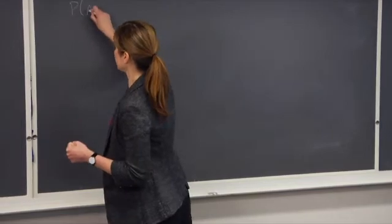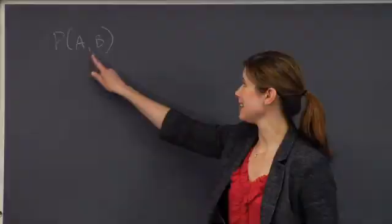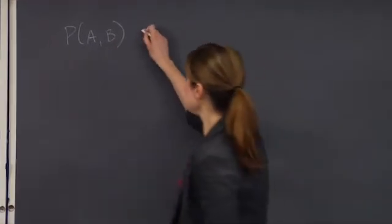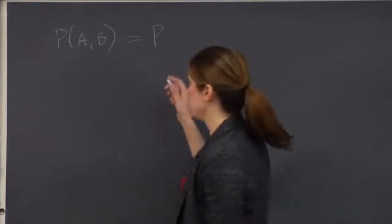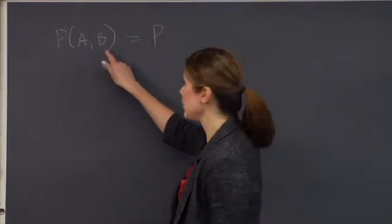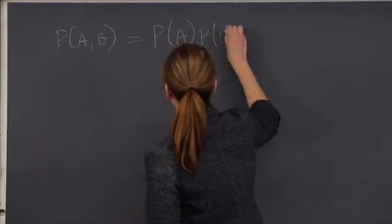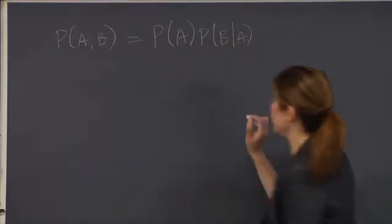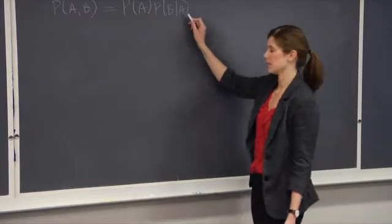So anytime we have a joint probability, in this case the probability of A and B, this can be rewritten using conditional probabilities. So the probability of A and B is the probability of A times the probability of B given A. And this will always hold regardless of whether or not A or B are independent.